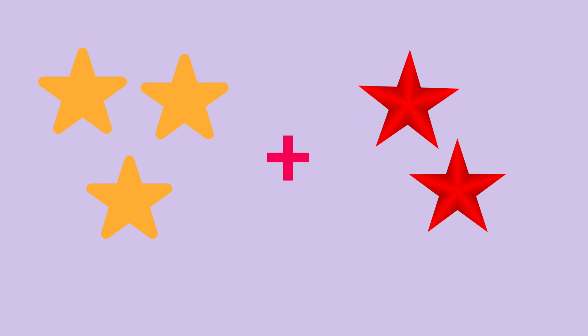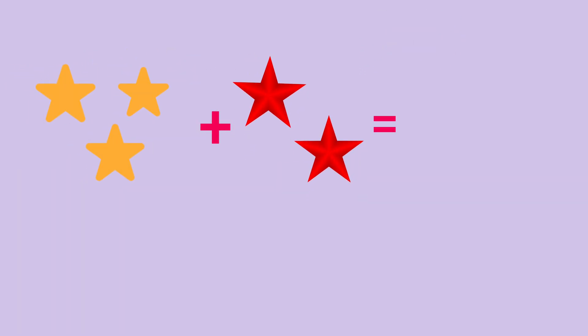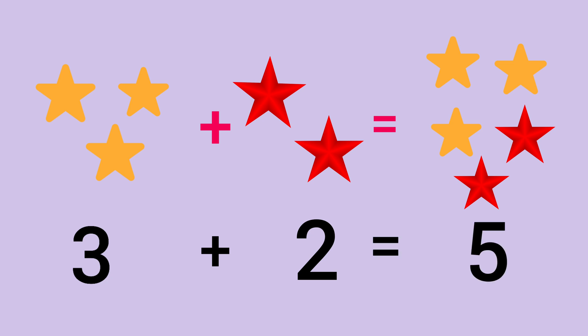Now you try one. Three add two. One, two, three, four, five. Three add two equals five.